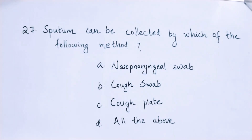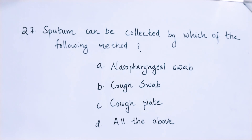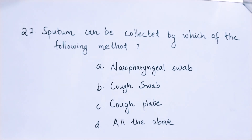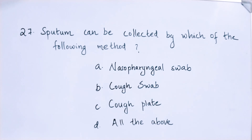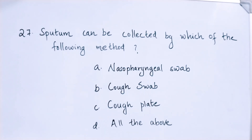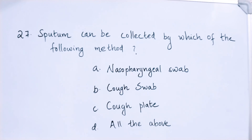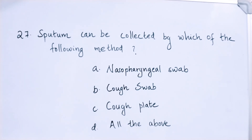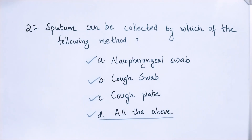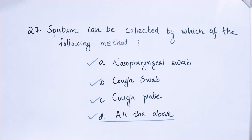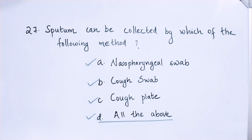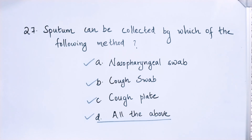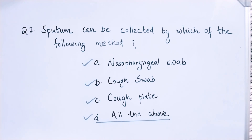Next question: Sputum can be collected by which of the following methods? Option A: nasopharyngeal swab, option B: cough swab, option C: cough plate, option D: all of the above. The right answer is option D — all of the above. All these methods can be used for collection of sputum.